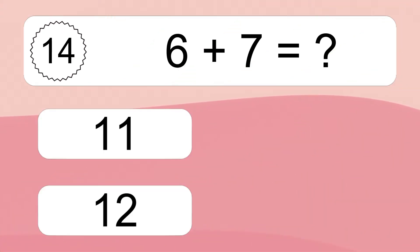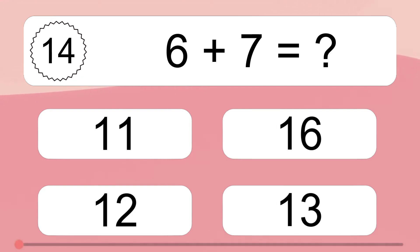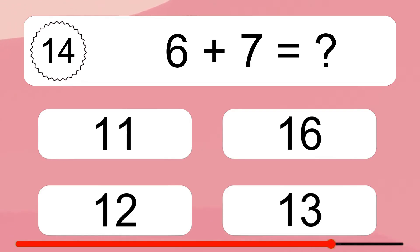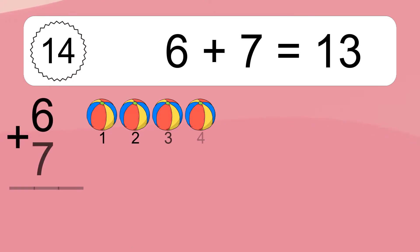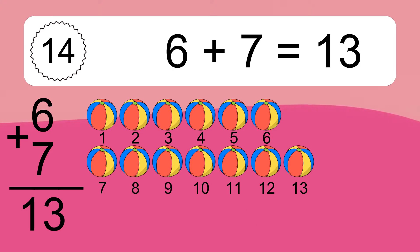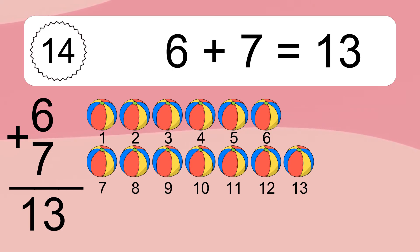6 plus 7 equals what? 6 plus 7 equals 13. Let's count it: 1, 2, 3, 4, 5, 6, 7, 8, 9, 10, 11, 12, 13.